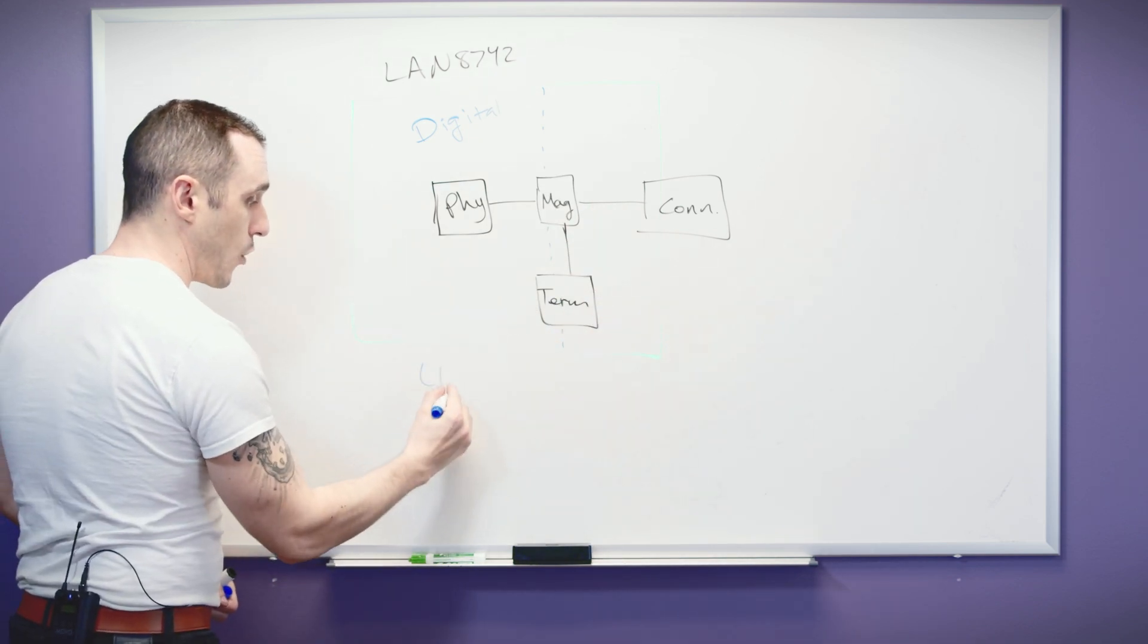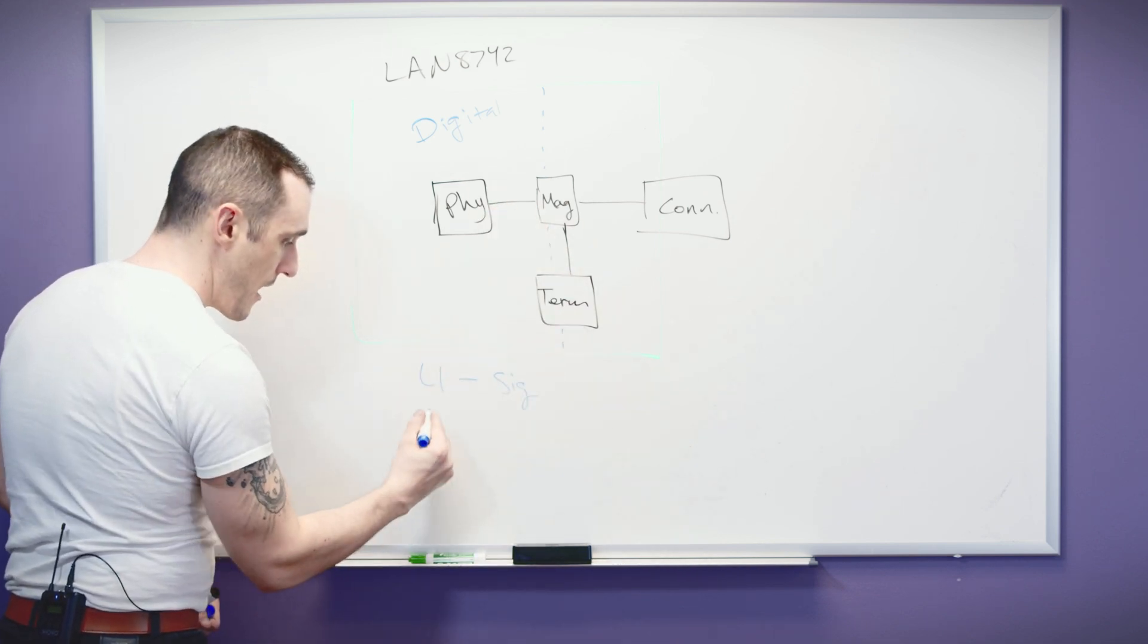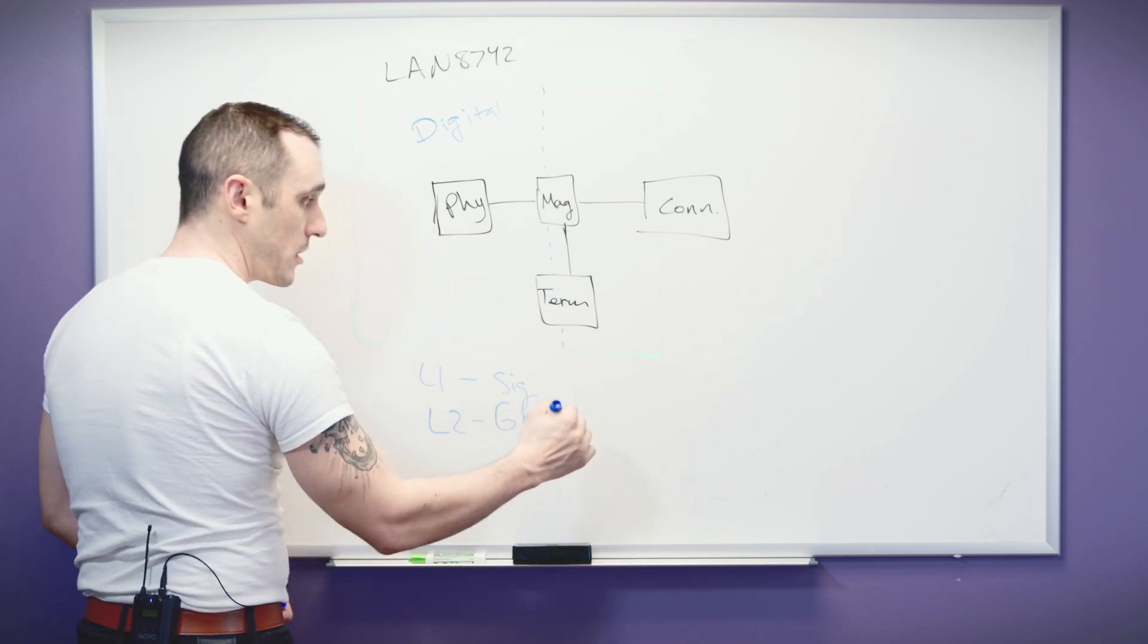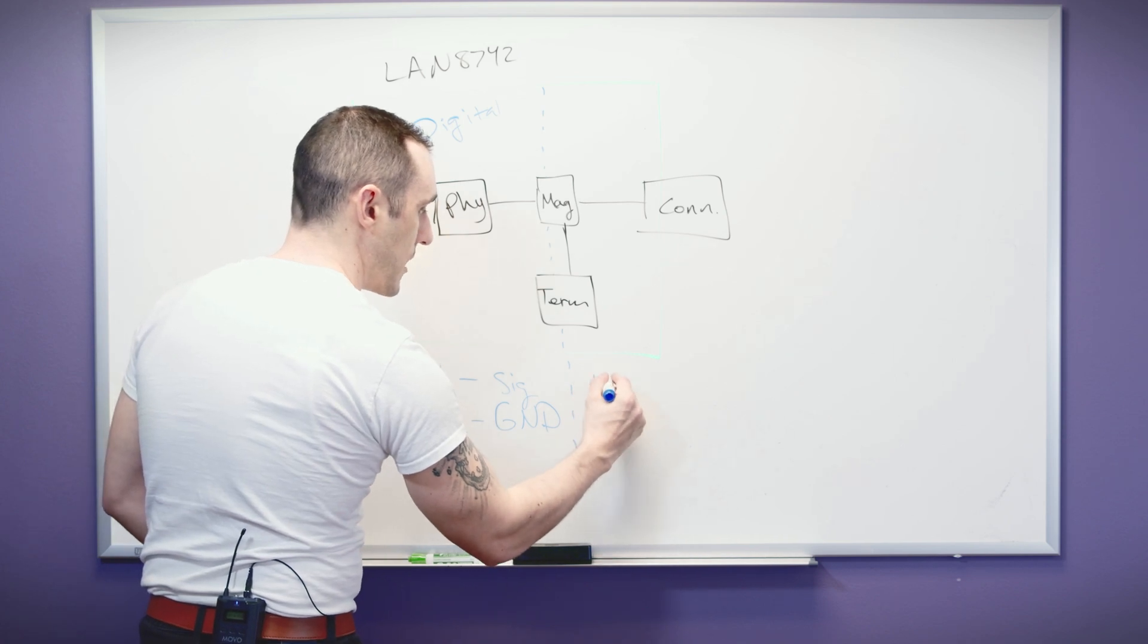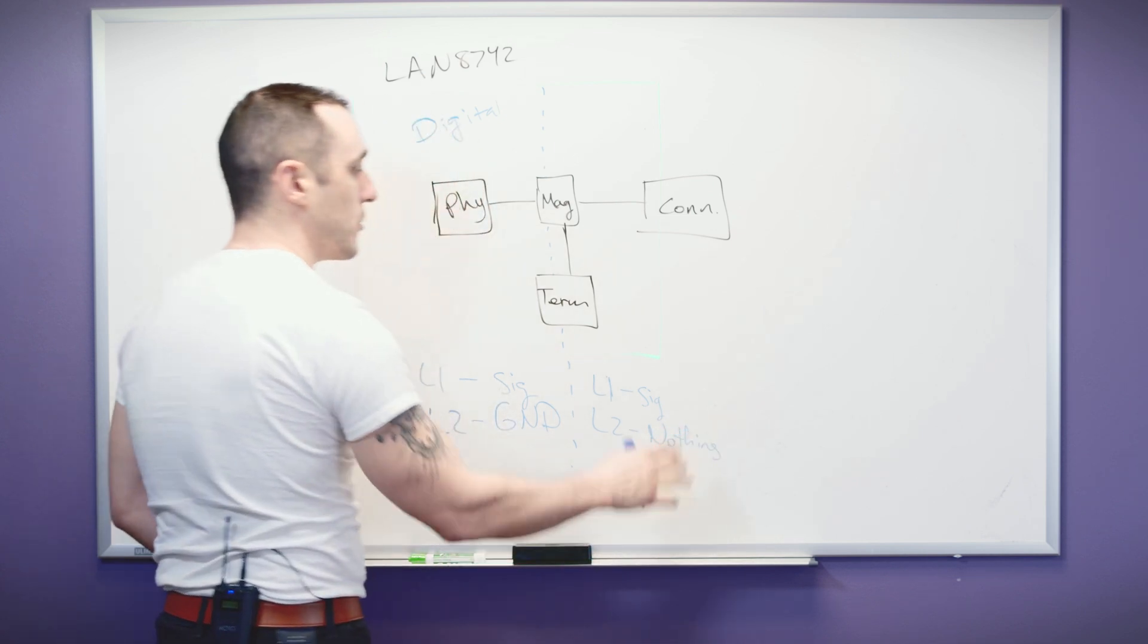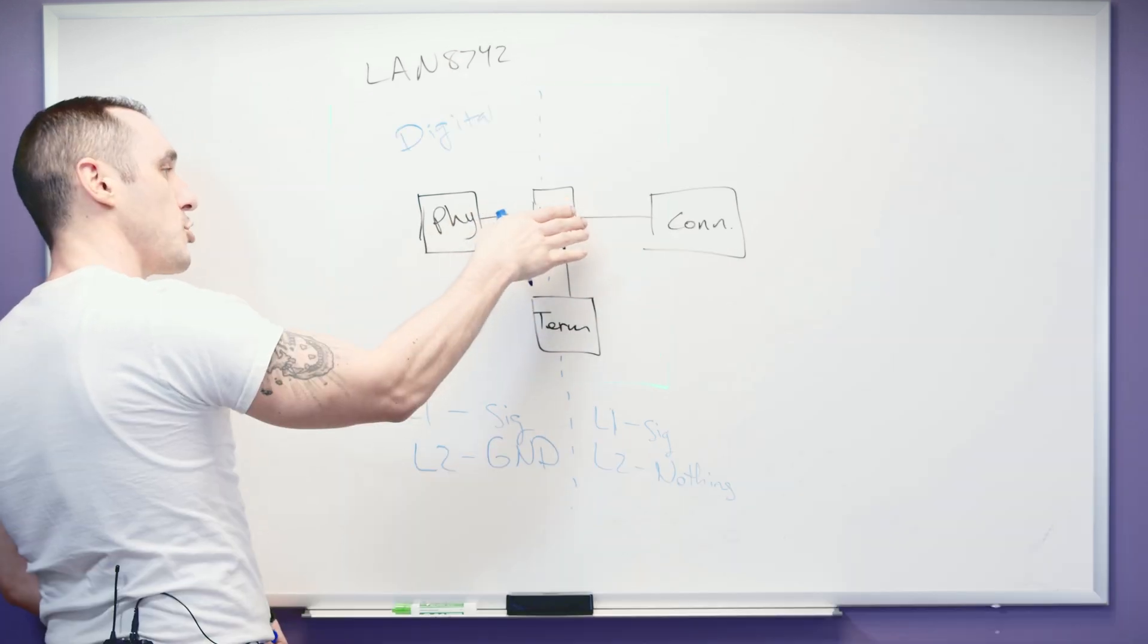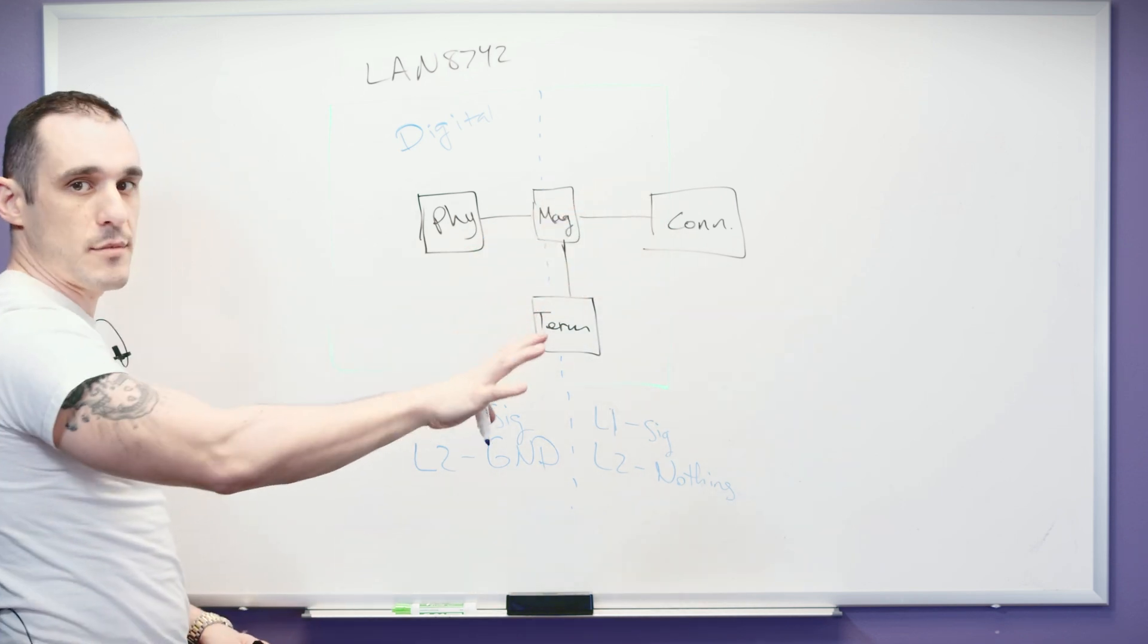So here on L1 we would have our signals and our components as we see here. And then L2 we would have our ground except in this region. Here we would have L1 as SIG but L2 we would have basically nothing. And then it would be cleared below the rest of the stack up. So we basically just have some differential pairs routing right out of the magnetics into the connector with nothing beneath it.